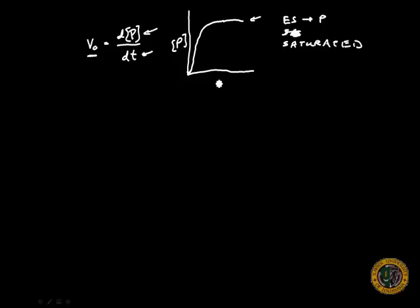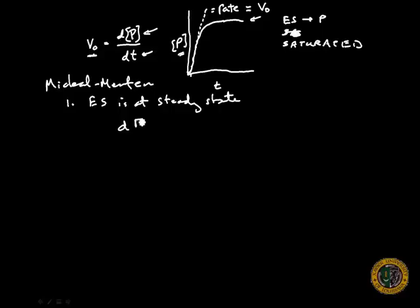If we're looking at time when this occurs, we can measure the rate at which this generation of product occurs. This rate is equivalent to V0 if we apply the Michaelis-Menten assumptions. The number one assumption is that the ES complex is at steady state, that the change in concentration of our ES complex per unit time is equal to zero.